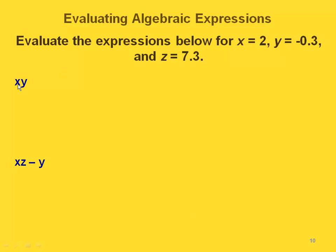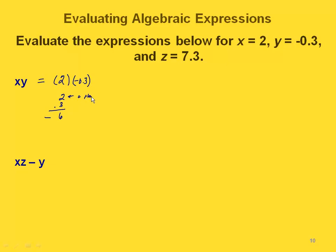Now let's evaluate some expressions when we have replacement values. If we have xy — remember that's the same as x times y. We're going to replace x with 2 and y with negative 3 tenths. Multiplying these: 2 times 3 tenths gives us 6. We know this is going to be negative because there was one negative among our factors. We had zero decimal places here and one decimal place here, so our answer needs one decimal place. Moving it one place gives us negative 0.6.